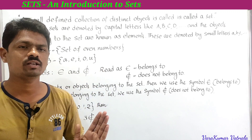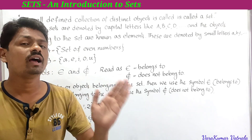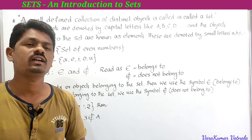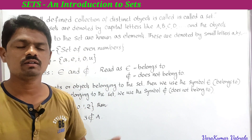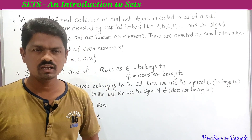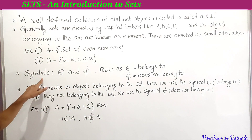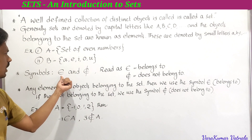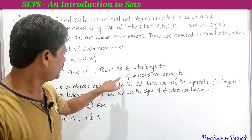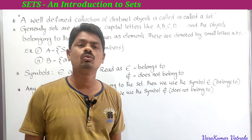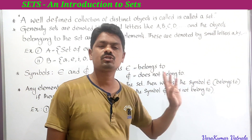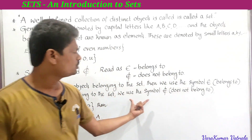So 'well-defined' means: we must be able to select universal elements, and for any element, we must be able to decide whether it belongs to the set or not. Next, the symbols we use: '∈' means 'belongs to' and '∉' means 'does not belong to.' If an object belongs to the set, we use the belongs-to symbol; if it does not, we use the does-not-belong-to symbol.